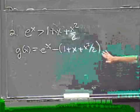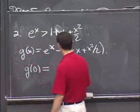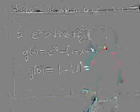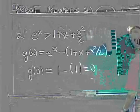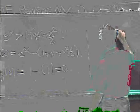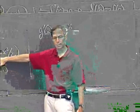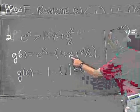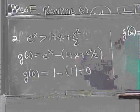And now I'm just going to do exactly the same thing I did before, which is I get started with g of 0, which is 1 minus 1, which is 0. And g prime is e to the x minus, now look at what happens when I differentiate this. The 1 goes away, the x gives me a 1, and the x squared over 2 gives me a plus x.